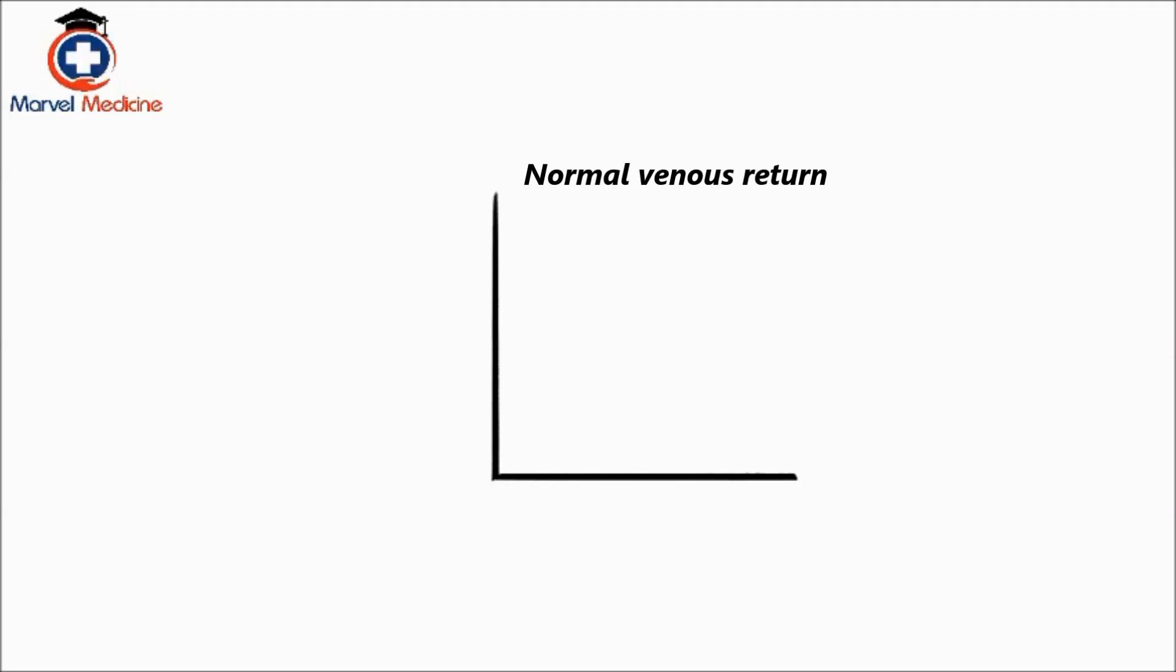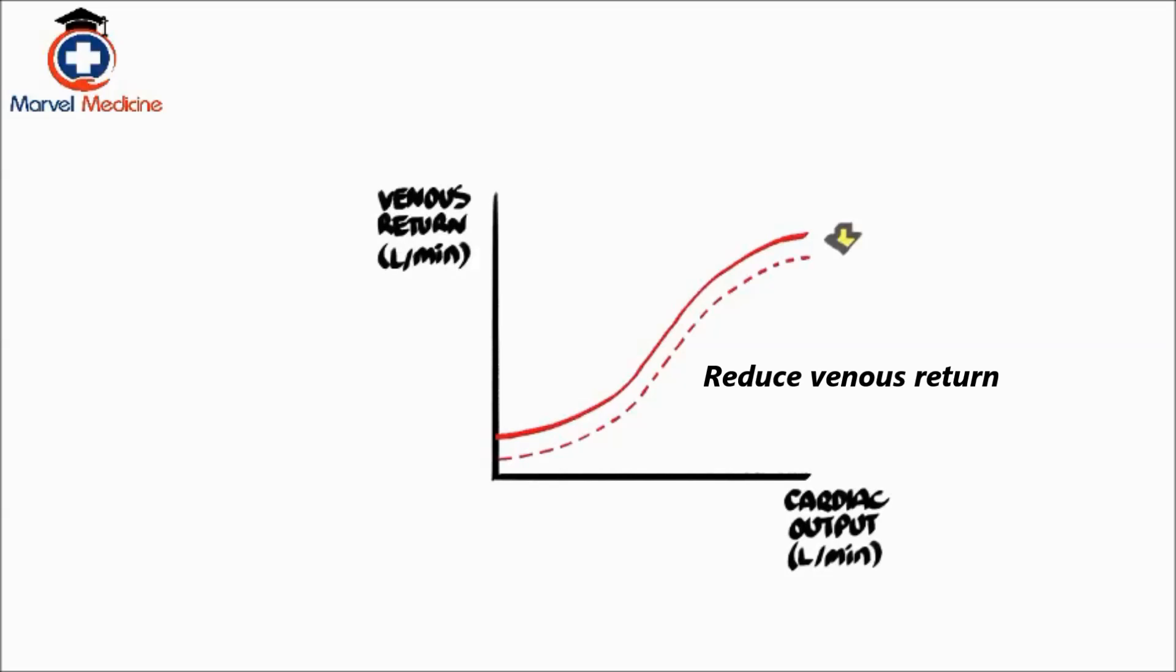So if there's a question with a graph showing normal venous return, and then a dashed line showing reduced venous return, and they ask what maneuver can produce this change, you know valsalva is one of them.